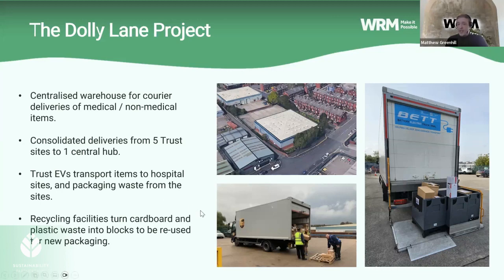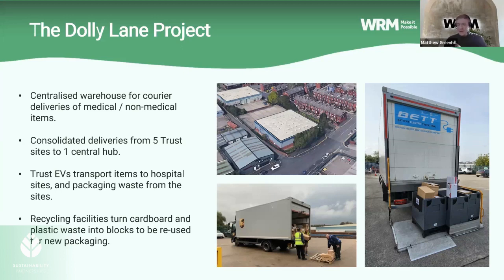Items are taken to each site via EVs, and packaging is then sent back via EVs to Dolly Lane, amalgamated with other plastic and cardboard waste. Once back at Dolly Lane, the waste cardboard is put through a baling machine producing half-tonne blocks, and waste plastic — including theatre tray wraps — is gathered, compressed into blocks, and collected by suppliers to be made into fresh packaging for products procured by the trust.